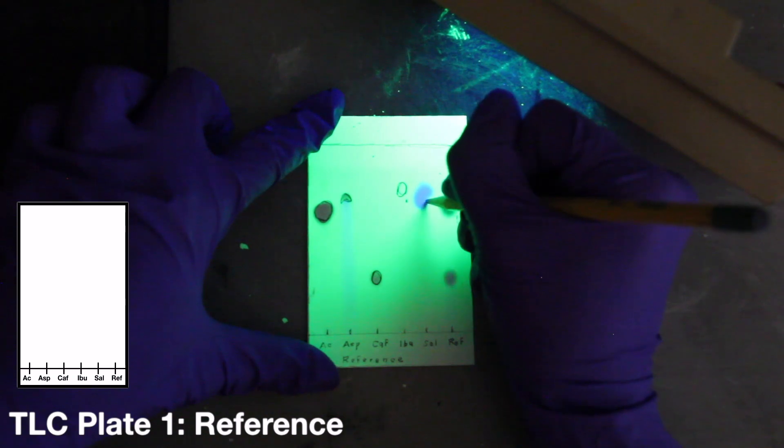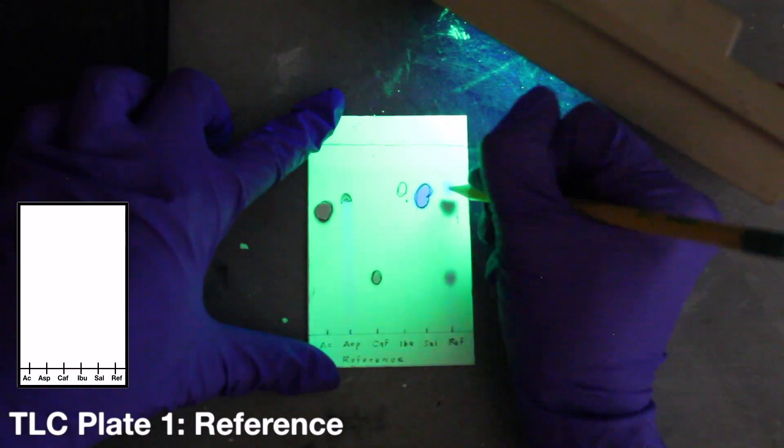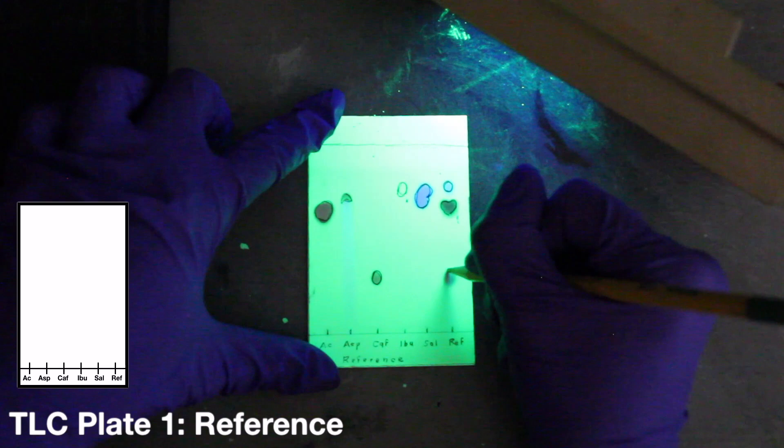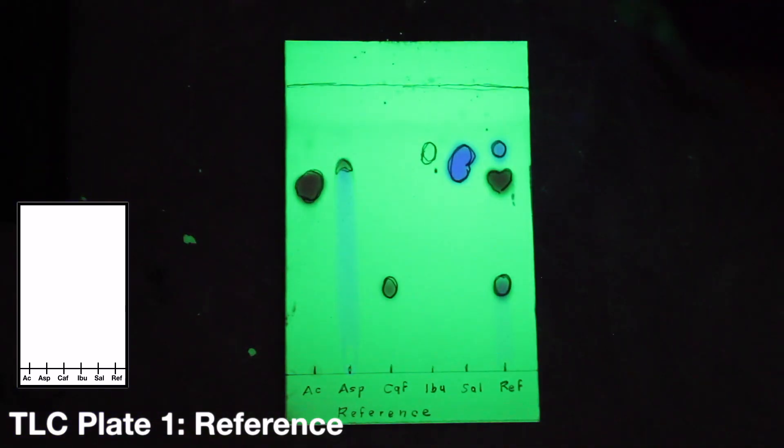For additional visualization, you can dip your plate in a jar containing a reactive solution and blot the excess solution with a paper towel. Notice which spots become visible and note their relative colors. Alternatively, you may place your TLC plate in a jar containing a few iodine crystals for a few minutes. As always, record your observations in your lab notebook.